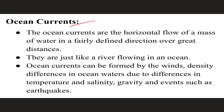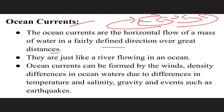The third and last important ocean movement is ocean currents. Ocean currents are the horizontal flow of a mass of water in a fairly defined direction over great distances. Unlike waves and tides which last for minutes or hours, ocean currents carry a large water mass in a defined direction — they are just like rivers flowing in the ocean. Ocean currents can be formed by winds, density differences in ocean waters due to differences in temperature, salinity, gravity, and other events. These are the results of all the external and internal forces we have discussed.